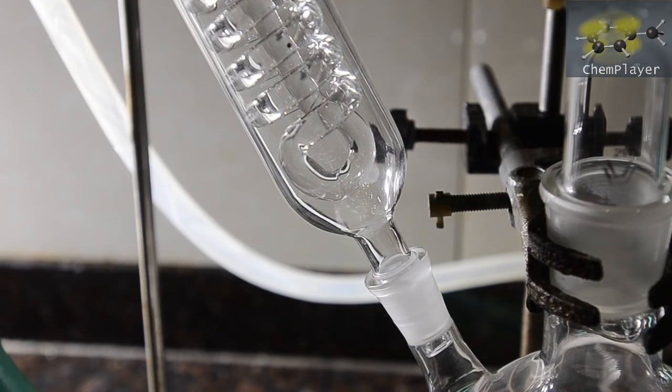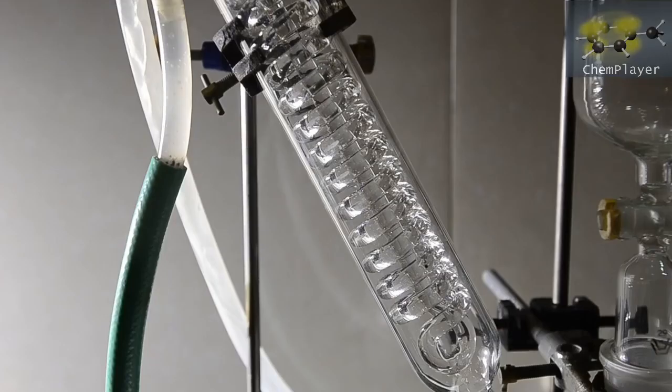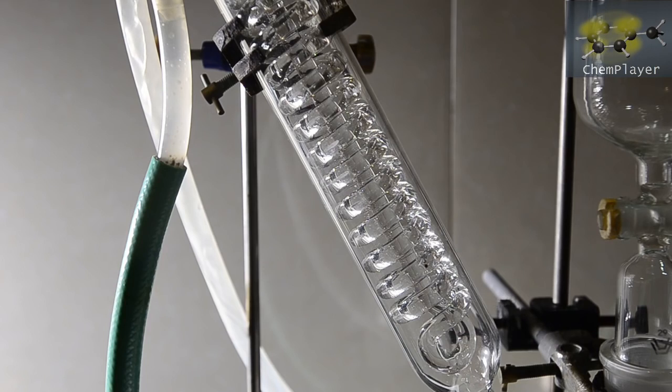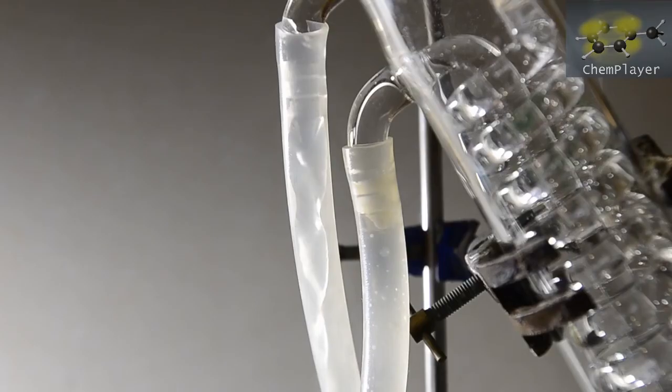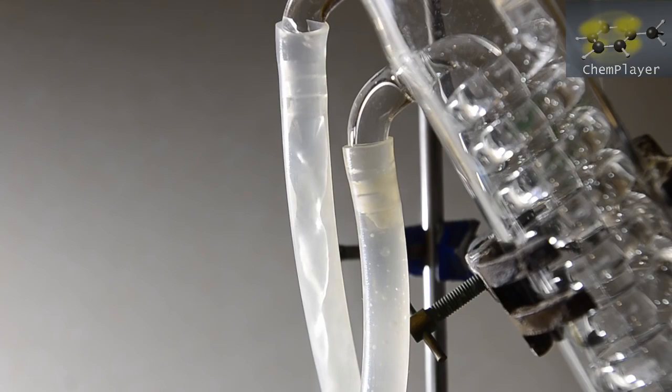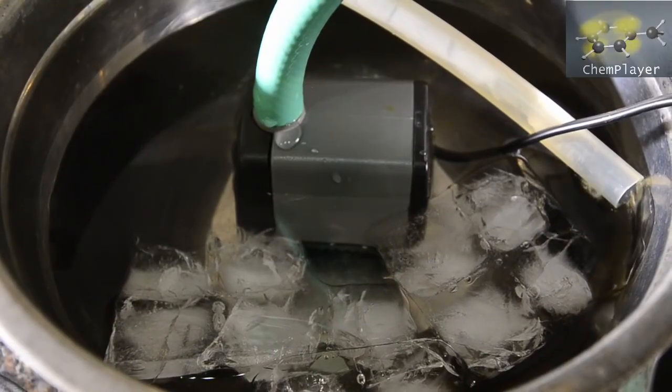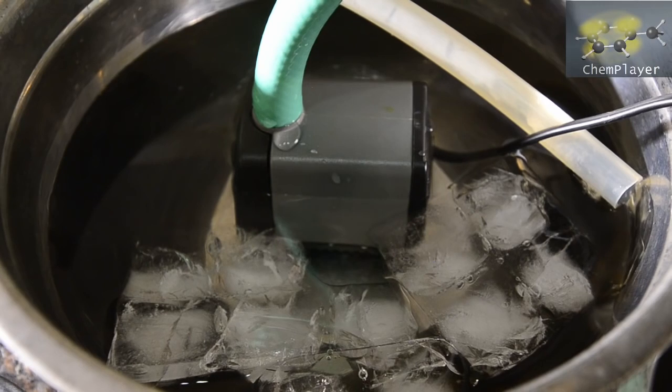And now also attached to the flask we've got a reflux condenser. This has cold water running through it, cooled by ice. Hydrazine and isopropyl nitrite are very volatile and so it's important to use cold water here.